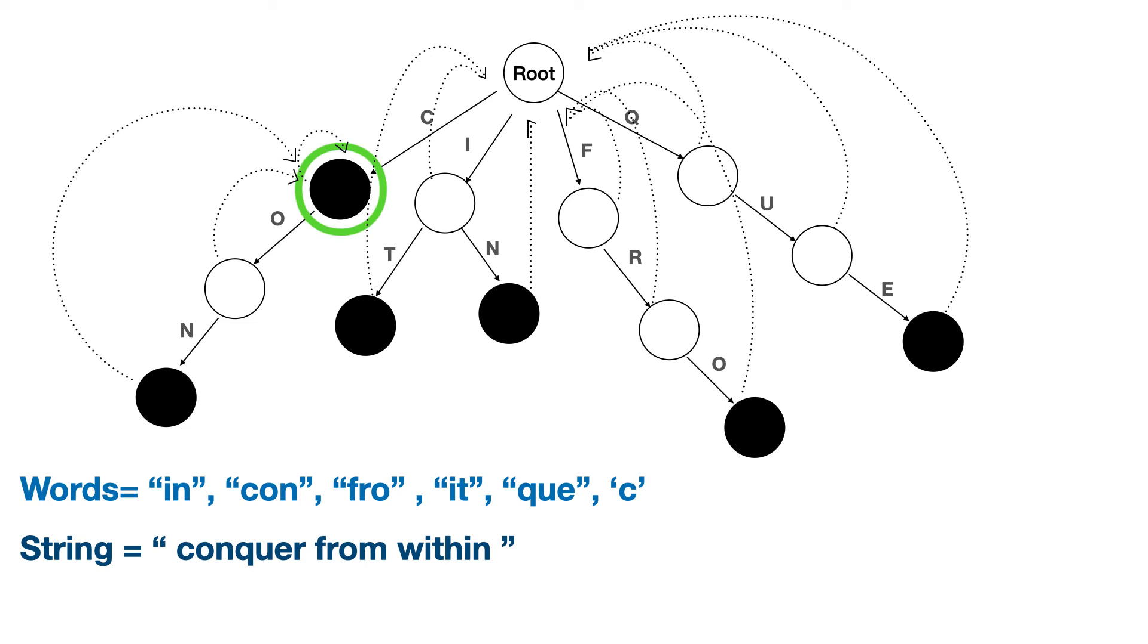Now, after printing C, there is a letter Q. So it's a failure state. So it goes back to the root. Since there is a Q state from the root, it goes to the Q state and then followed by U and E. And since E is an output state, it prints the word QUE signifying that it is present in the string and the next character is R. So it is a failure case. So it goes back to the root. So this is how it traverses when it's a failure case. This is why failure links are very important in automation.